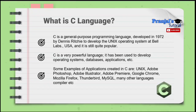C is a general purpose programming language. Dennis Ritchie was a computer scientist who developed it in 1972. General purpose means that in this language we can use it for different varieties of work. He developed this particular language at Bell Labs, and that language is known as C language.